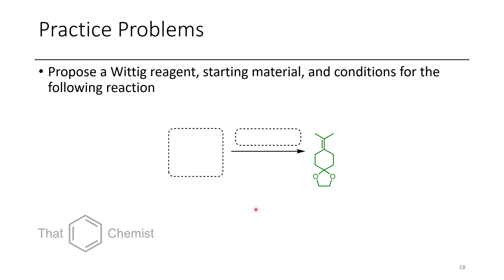And so with that, I'd like to assign three practice problems for this lecture. In this first problem, I'd like you to identify a starting carbonyl, as well as Wittig reagent and conditions that would afford us with this product. There's not one right answer for this. There's a couple, but there's one that should be more obvious to you at this point.